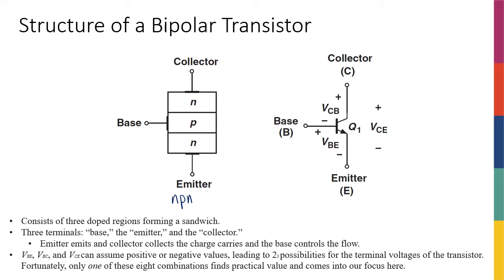We're going to call one of these N-type materials emitter, the other one base, and the last one collector. So there are three terminals: base, emitter, and collector.